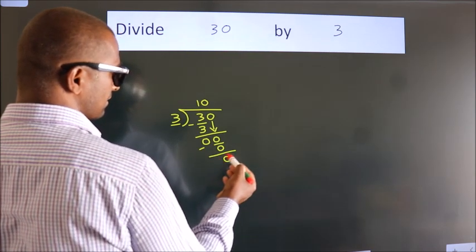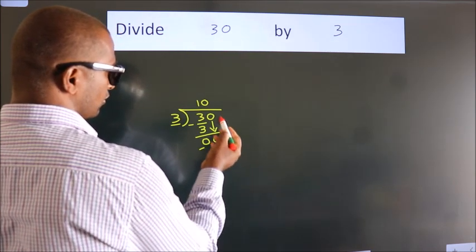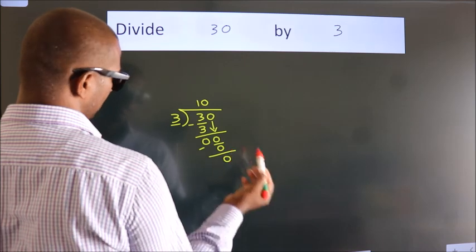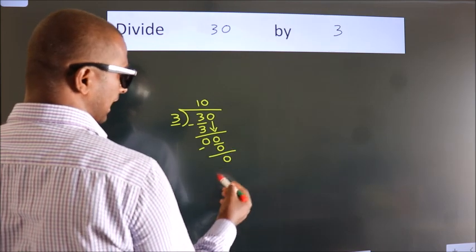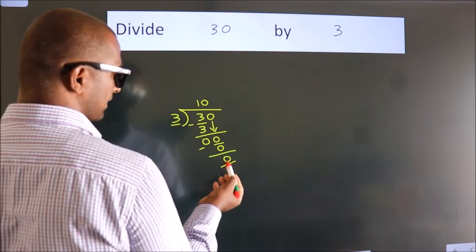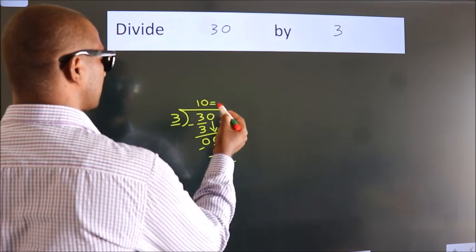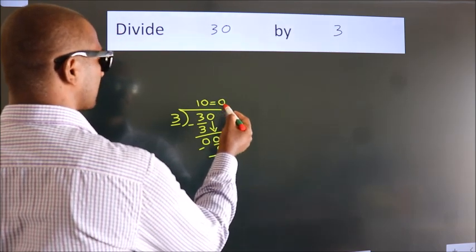After this, there are no more numbers to bring down, and we got remainder 0. So this is our quotient.